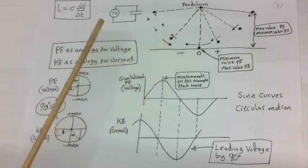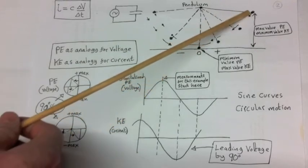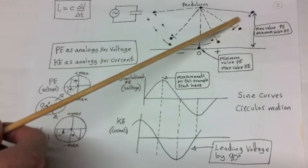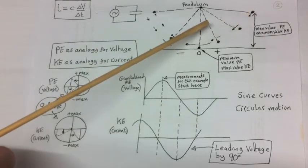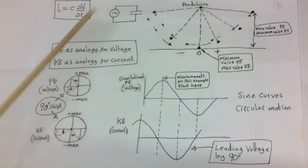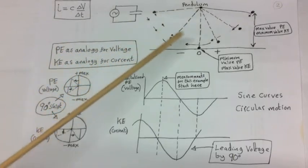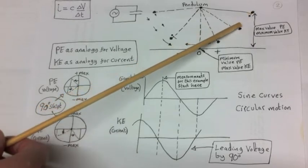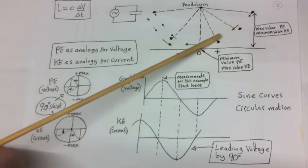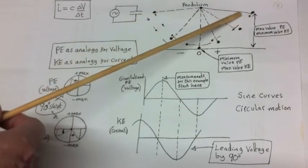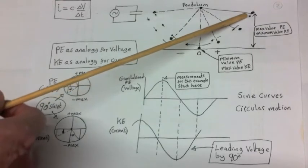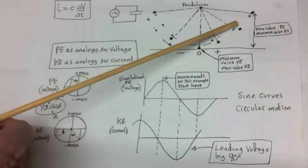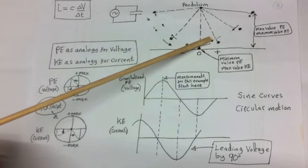At the moment we let go, there's no motion, so the kinetic energy — the energy of motion — is zero. Relating potential energy to voltage and kinetic energy to current, we can say that here we're at the maximum voltage, about to start dropping off, and at this point there is no voltage change. Therefore the current, represented by arrows showing its size, is also zero at this point — just as with the kinetic energy.